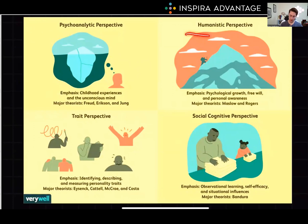Now let's take a look at the humanistic perspective. This perspective focuses on the internal feelings of healthy individuals as they strive for happiness and self-realization. Key concepts here include Maslow's hierarchy of needs and Rogers' unconditional positive regard. Rogers' unconditional positive regard is regarding therapy sessions, where you treat the patient as if they're in the right, even if they aren't.